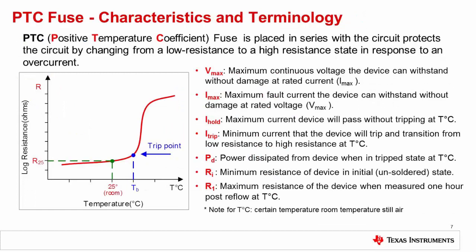The PTC fuse is a device that exhibits low resistance under normal conditions and exhibits a high resistance in response to an overcurrent. The name PTC stands for Positive Temperature Coefficient, and the device's resistance will increase with temperature. Under a fault condition, the self-heating of the resistor will cause the resistance to pass a trip point, and the resistance will dramatically increase as a result. The large resistance will effectively limit the current, similar to an open mechanical fuse. Once the fault condition is removed, the PTC will return to a low resistance state.